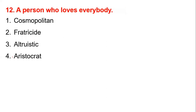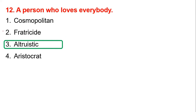Number 12: a person who loves everybody. The options are cosmopolitan, patricide, altruistic, aristocrat. Altruistic means a person who loves everybody. Cosmopolitan means a person from everywhere. So altruistic is the correct answer.